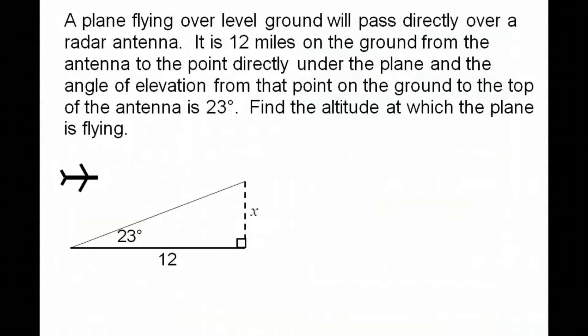Okay, a plane flying over level ground will pass directly over a radar antenna. It is 12 miles on the ground from the antenna to the point directly under the plane, and the angle of elevation from that point on the ground to the top of the antenna is 23 degrees. Find the altitude at which the plane is flying. Now you can assume on this that this plane is flying in a horizontal line straight across. So his height is going to be the same all the way across here, whether we measure it right here or here or over here. He's maintained the same height.